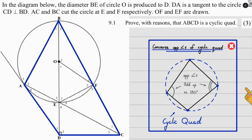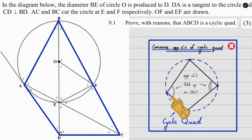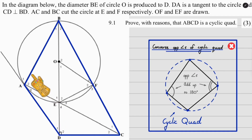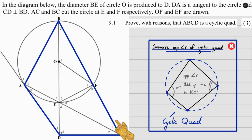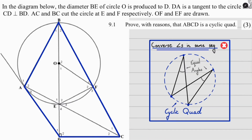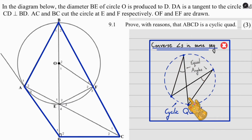The second method of proving a cyclic quad is if you prove that the opposite angles add up to 180 degrees. That would mean proving the whole of B plus the whole of D equals 180, or A2 and A3 plus the whole of C equals 180. But I don't know a lot of information about those angles, so I'm going to opt for the last method — converse angles in the same segment. If I prove those angles are equal, it adequately proves I have a cyclic quad.